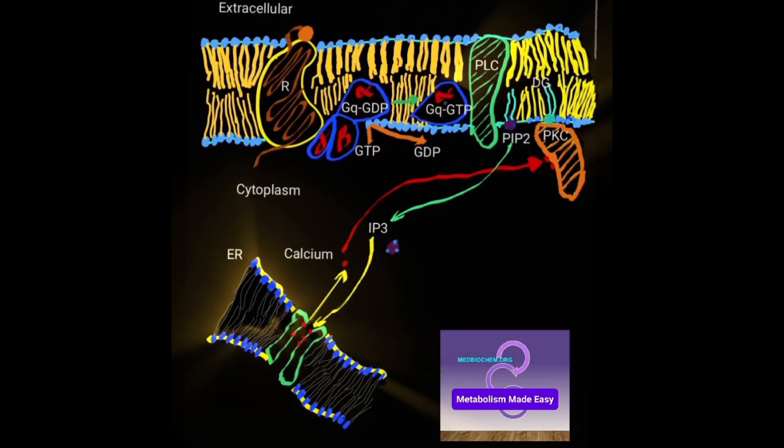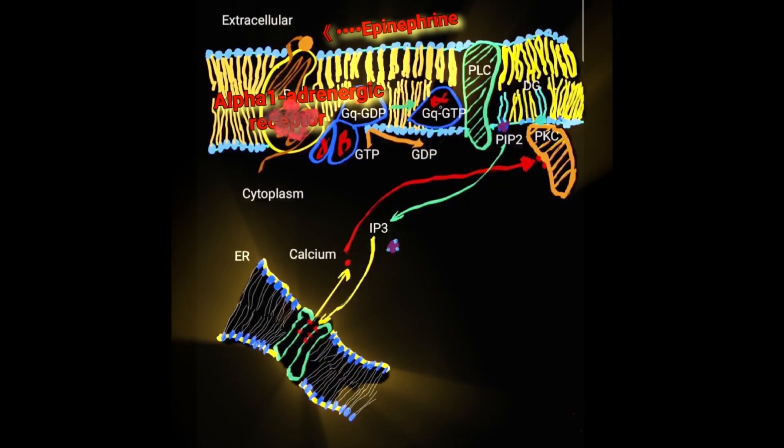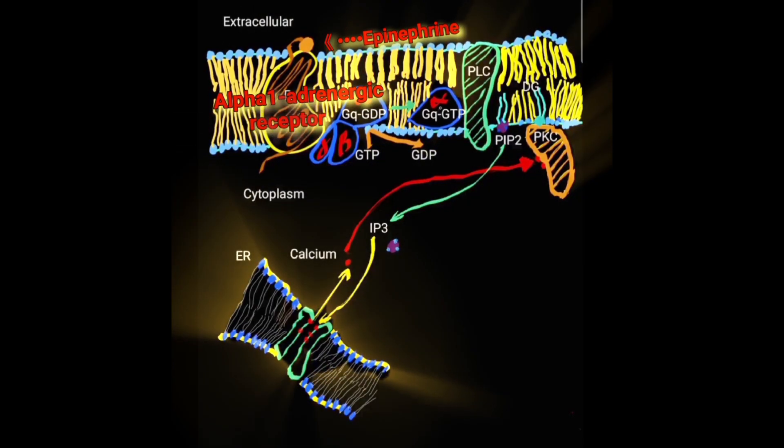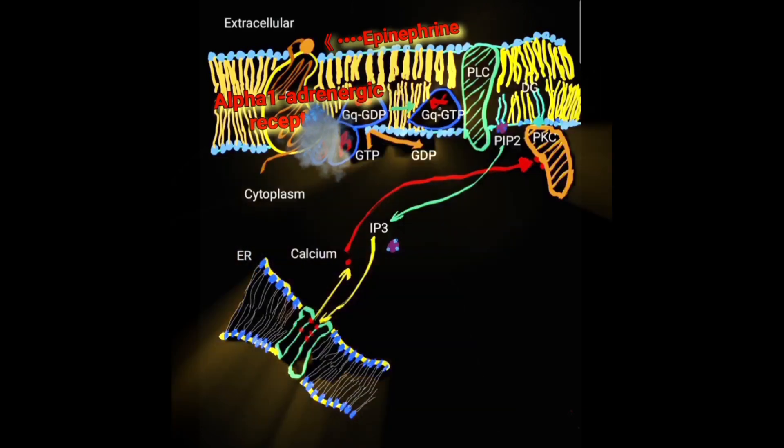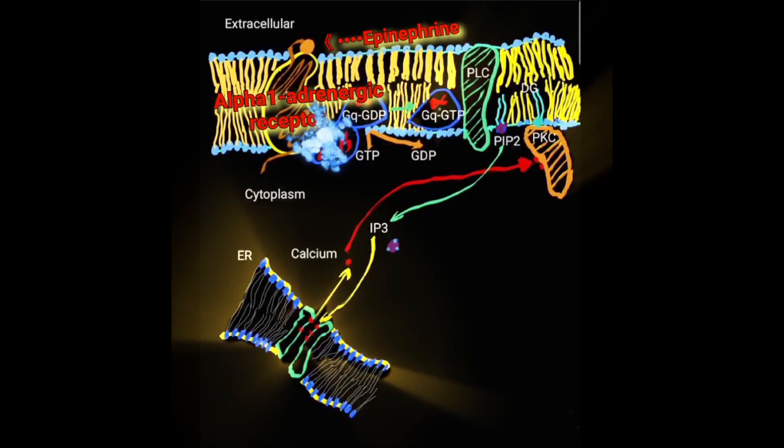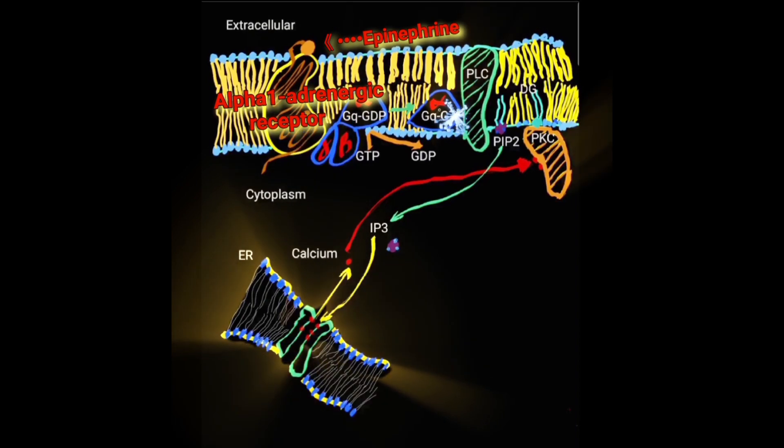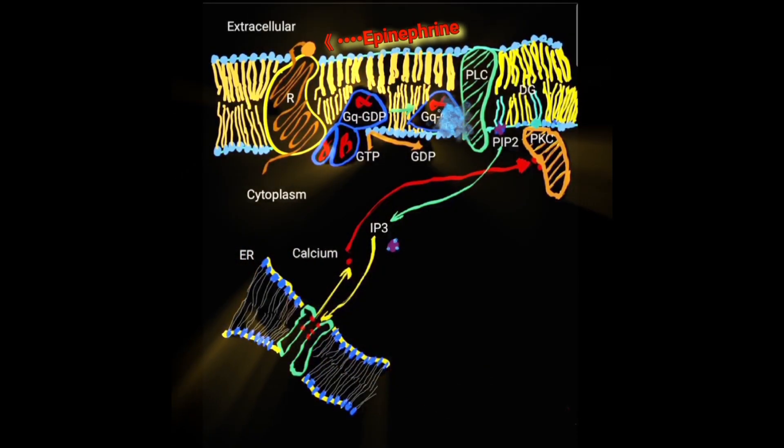Activation of the alpha-1 adrenergic receptor by epinephrine results in the activation of the trimeric G protein designated GQ. GQ dissociates to produce GQ alpha bound to GTP, which then can activate phospholipase C.